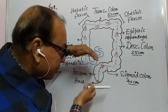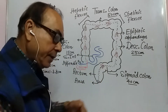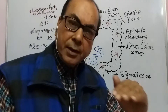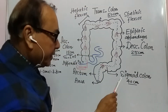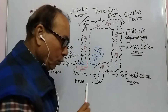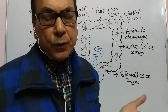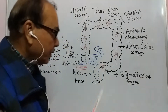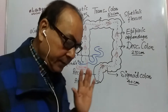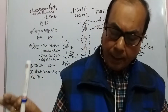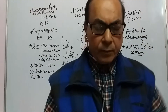Then again it becomes somewhat transversally parallel, and this is called the sigmoid colon, which has a length of 40 cm. The next part is the rectum, and then the anus. This is what we have shown in the diagram. Now we shall discuss each part in detail.